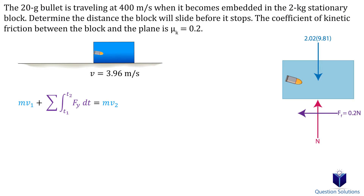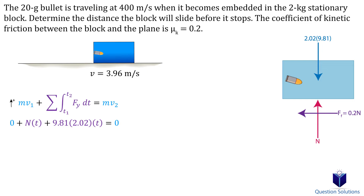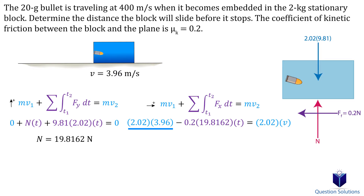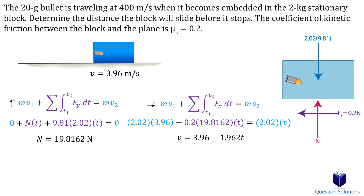For vertical movement, assuming up to be positive, the initial momentum is zero since the block is not moving vertically. We have the normal force multiplied by time and the weight multiplied by time, all equal to zero. Dividing by t lets us find the normal force. For horizontal movement, assuming right to be positive, we have mass times initial velocity, then friction — the coefficient of kinetic friction times normal force times time — on the impulse side. Isolating for velocity gives an equation for the velocity of the block with respect to time.